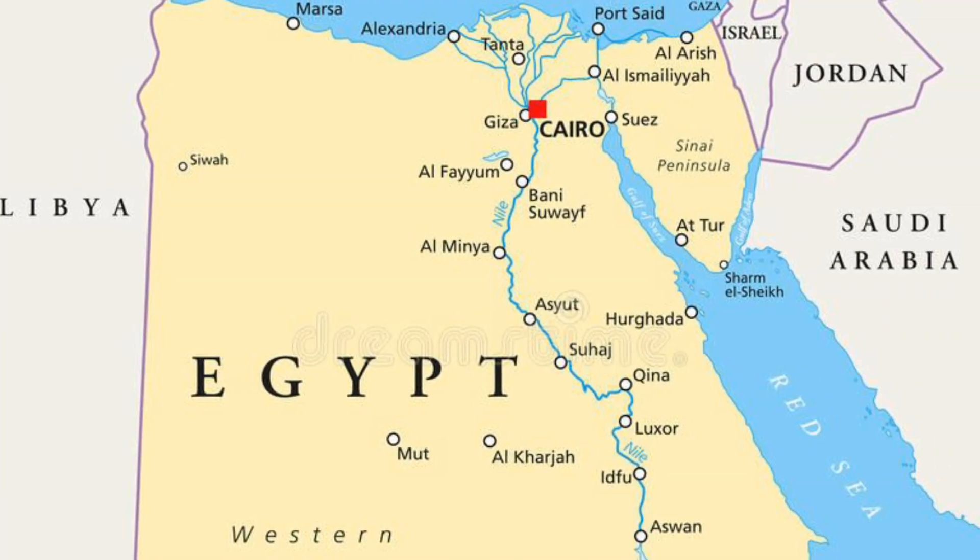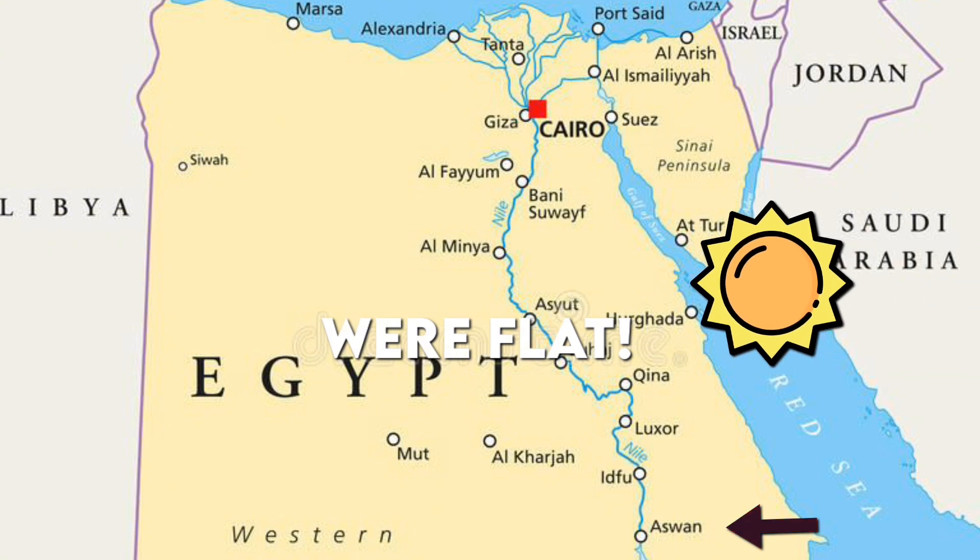Around 250 BCE, the Greek scholar Eratosthenes heard that the sun was directly overhead in Aswan at a certain time, meaning there were no shadows at all in the city. This made him think, if the Earth were flat, then when the sun is directly overhead in Aswan, it should also be directly overhead in Alexandria at the same time.